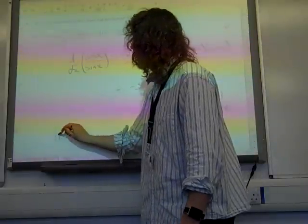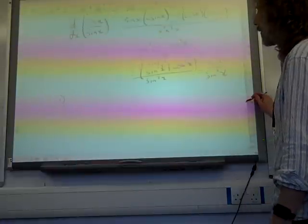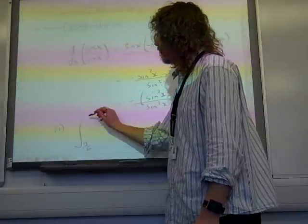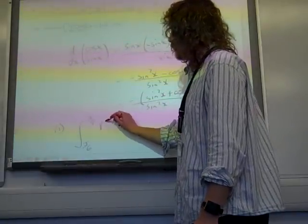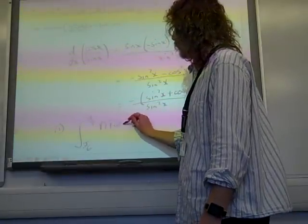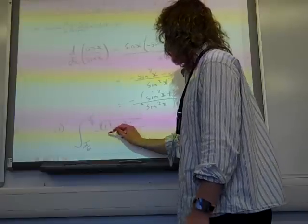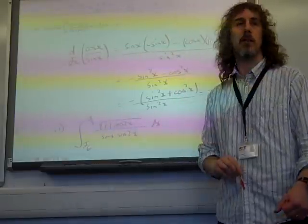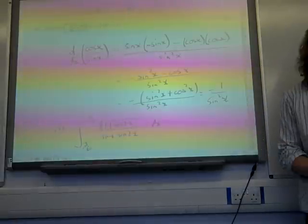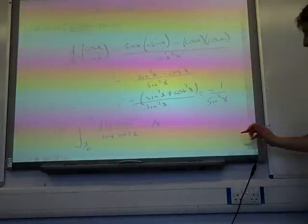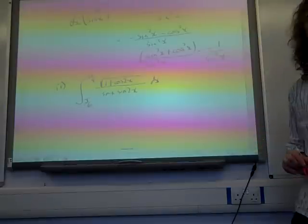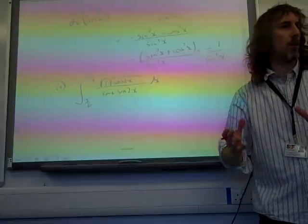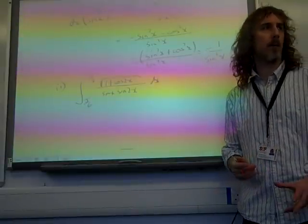Now this question is littered with double angle things, isn't it? Cos 2x, we've got the square root of 1 plus cos 2x over sine x, sine 2x, dx. And so, because we've got a mixture of x's and 2x's, the big hint has got to be that we're going to turn our 2x's into x terms.